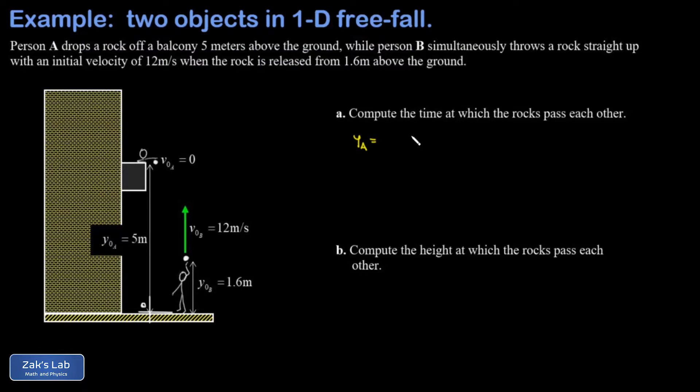For rock A, the person dropping it from the balcony, the position is given by the one-dimensional kinematics formula: y = y₀ + v₀t + ½at². Plugging in what we know about this rock, the initial position is 5 meters, the initial speed is zero so that term vanishes, and this